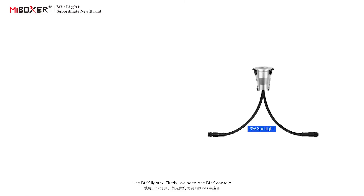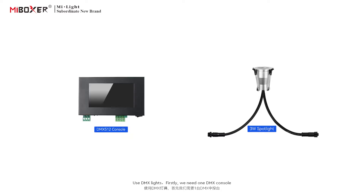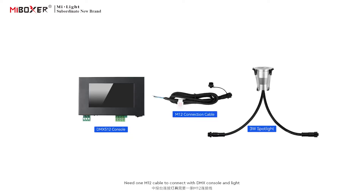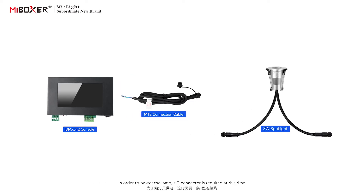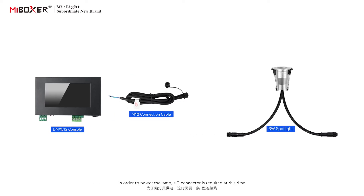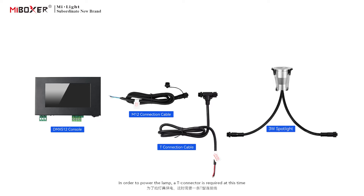To use DMX lights, firstly we need one DMX console. You will need one M12 cable to connect the DMX console and light. In order to power the lamp, a T connector is also required at this time.